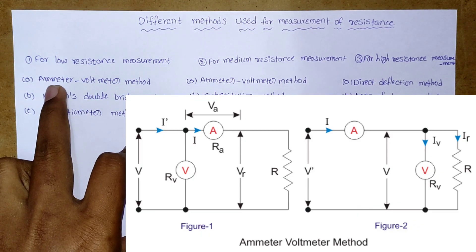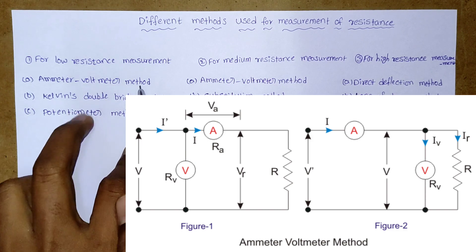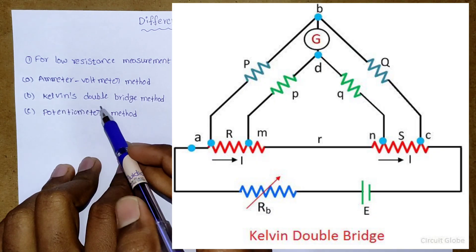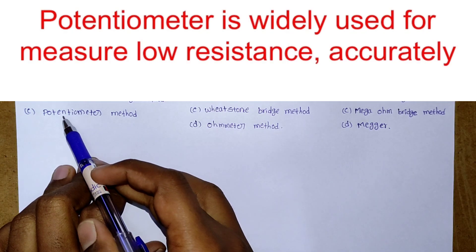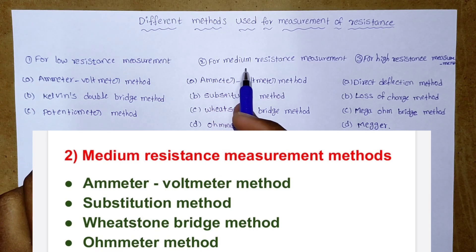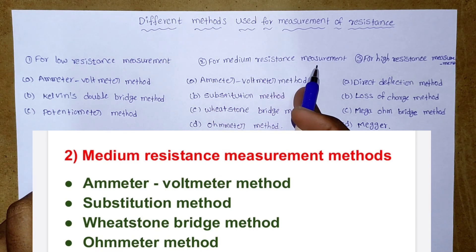First method is ammeter voltmeter method. Second one is Kelvin double bridge method and third one is potentiometer method. For medium resistance measurement,